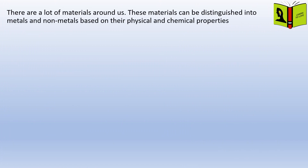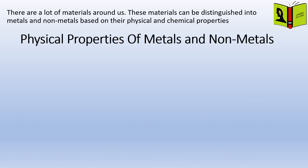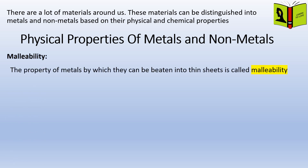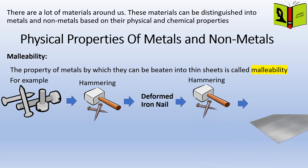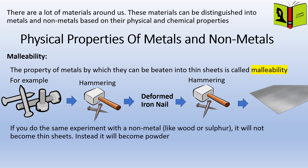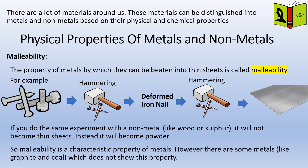These materials can be distinguished into metals and non-metals based on their physical and chemical properties. The property of metals by which they can be beaten into thin sheets is called malleability. For example, take an iron nail and hammer it. You can see that the nail is deformed. By further hammering, the deformed nail will be transformed into sheets. This property is called malleability. If you do the same experiment with a non-metal, it will not become thin sheets — instead, it will become powder. So malleability is a characteristic property of metals.